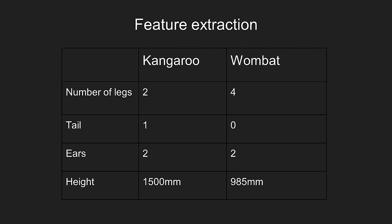There could be thousands of possible features in an image, but we need to select the features that are most useful or meaningful. For example, if looking at images of a kangaroo and wombat, we're considering attributes that describe the animal's appearance, such as number of legs, the presence or not of a tail, ears, height and weight. In our table here, we have some mammals and features associated with each.